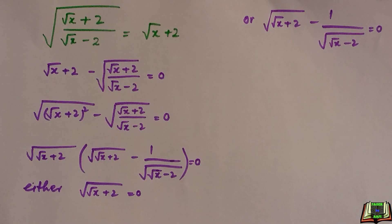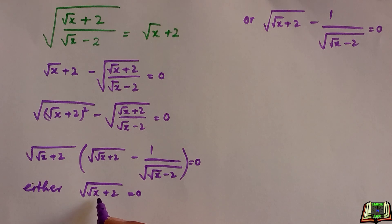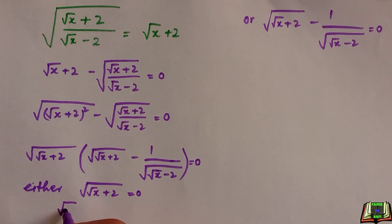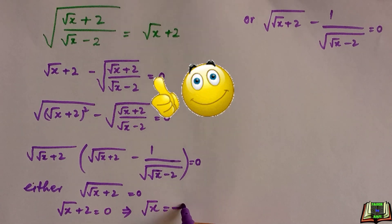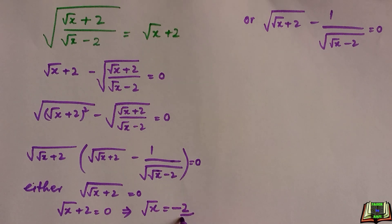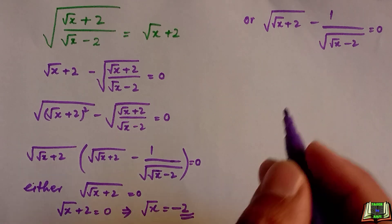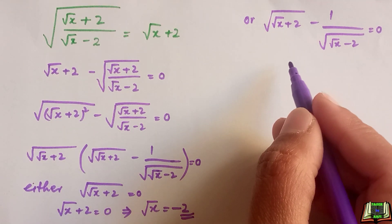Looking at the first case, if we square both sides, the square and root cancel out, giving root(x+2) equals zero, and then the square root of x equals negative 2. As we can see, this is an imaginary number, so we are going to reject this case because we will deal with real numbers only.